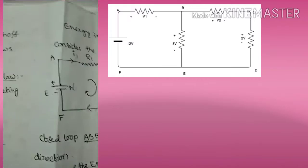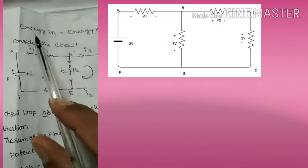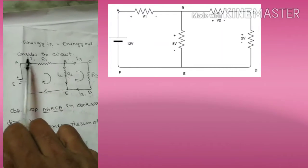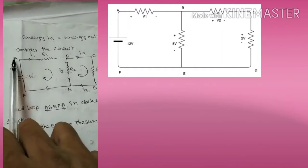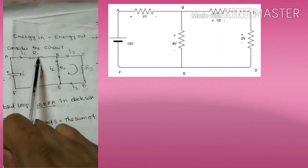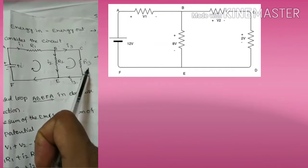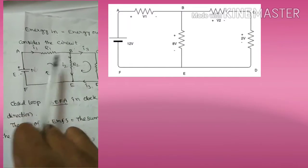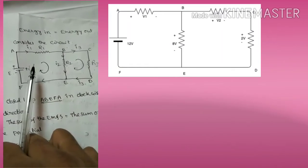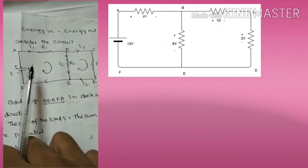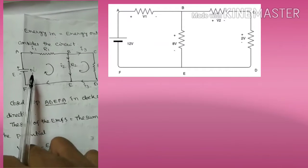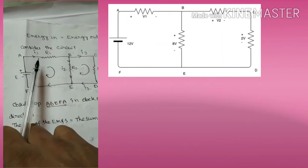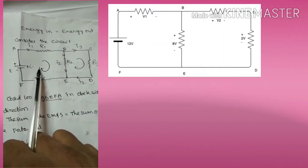Taking one closed loop, this is equivalent to saying energy in equals energy out. Consider a circuit with a battery and resistors r1, r2, and r3 labeled along path a-b-c-d-e-f. Current flowing in the clockwise direction is taken as positive, and traversal from positive to negative terminal of the battery is also taken as positive.